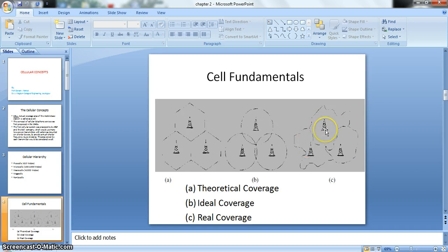Figure C, as you can see, shows the actual coverage area which is amorphous in nature, that is there is no shape. So there are these three coverage area shapes: figure A theoretical coverage, B is ideal coverage, and C is real coverage.